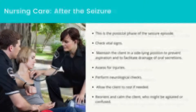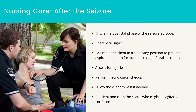After the seizure — this is the postictal phase: check vital signs and maintain the client in a side-lying position to prevent aspiration and to facilitate drainage of oral secretions. Assess for injuries and perform neurological checks. Allow the client to rest if needed. Reorient and calm the client who might be agitated or confused. Determine if the client experienced an aura, which can indicate the origin of the seizure in the brain. Try to determine possible triggers, such as fatigue.